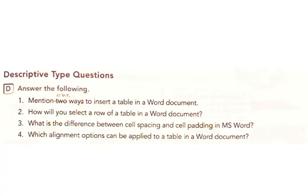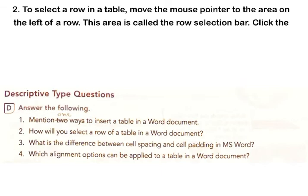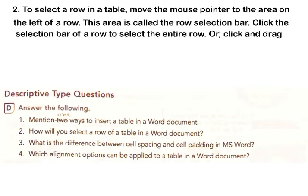2. How will you select a row of a table in a Word document? Answer: To select a row in a table, move the mouse pointer to the area on the left of a row. This area is called the Row Selection Bar. Click the Selection Bar of a row to select the entire row.